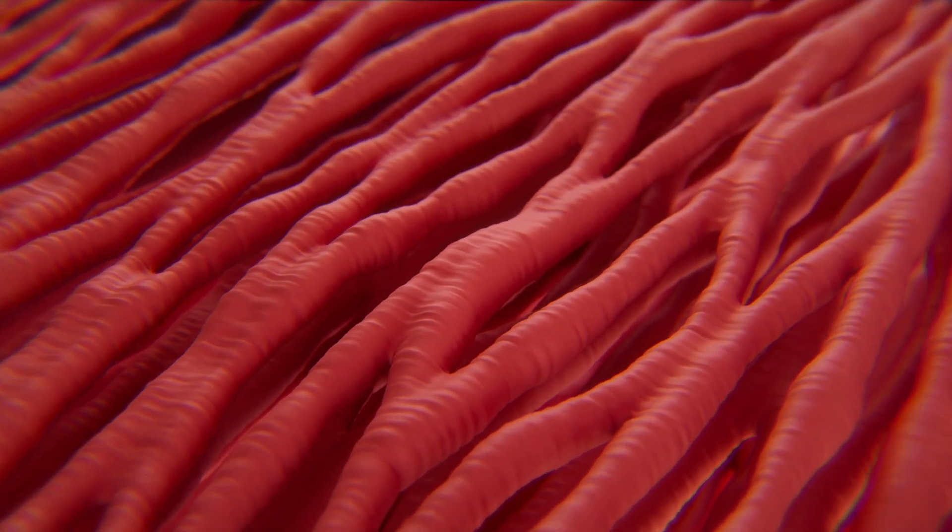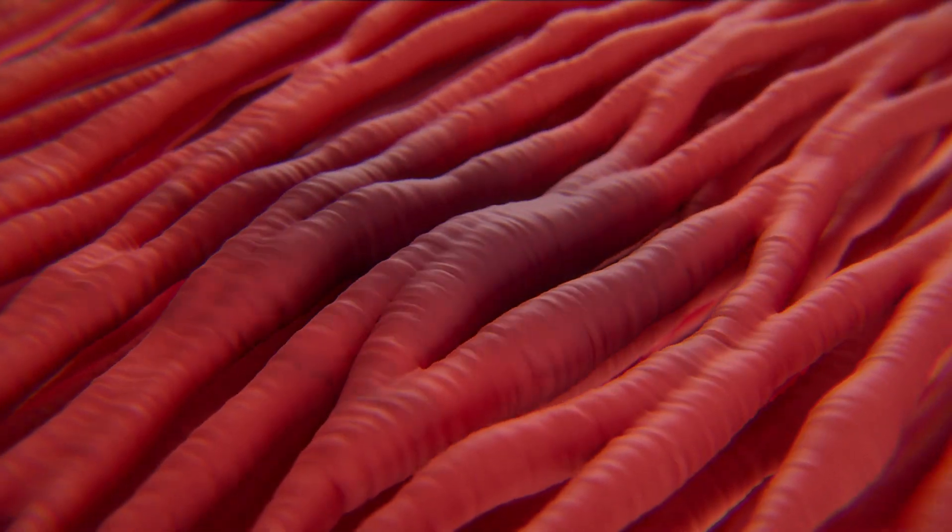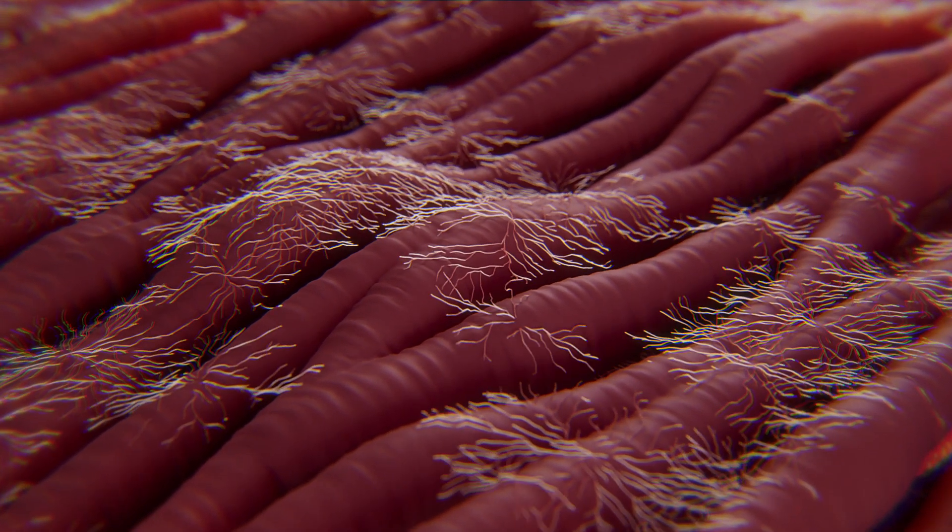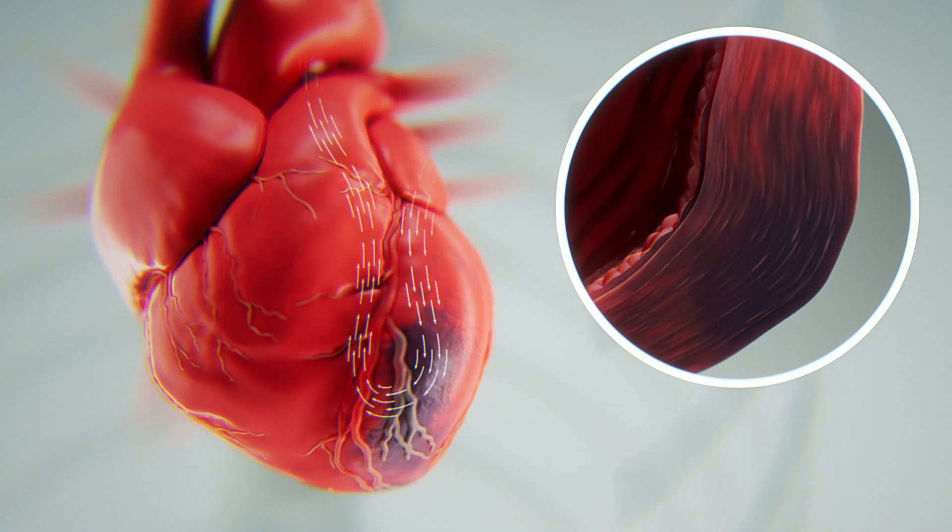Cardiomyocytes significantly alter their shape and structure, growing thicker and stiffer. The heart tissue also develops fibrosis that further impairs the ability of the heart muscle to contract and relax efficiently.